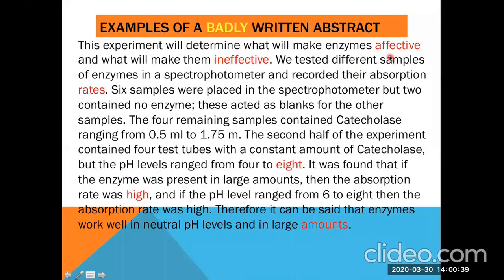When we analyze this research abstract, we can easily recognize that the author has talked about different terms generally. He used generic terms without specifying kinds of results. For example, when we say 'rates,' what type of rates? Nothing has been mentioned about whether the rates were very high or how high. The author should be specific — that's why this is a badly written abstract.